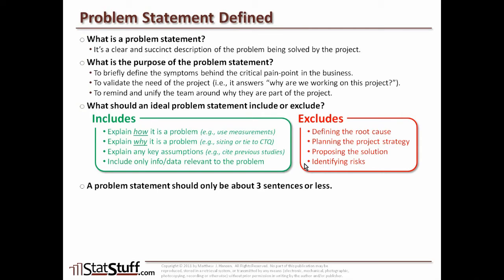When you're doing a problem statement, I strongly recommend you keep it very brief — only three sentences or less. Ideally, if you can get it down to one sentence, that's ideal, as long as you're following all the other inclusions and exclusions. If you need more context or more background information, I like to create what I call a background statement. Let that background statement be something that's separate, layering the context to define maybe key terms, key expectations, or processes within the business in order to lay down the proper context for the problem statement — only if it's supporting the problem statement and you think it's critical.